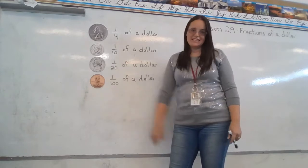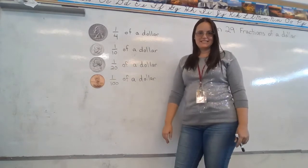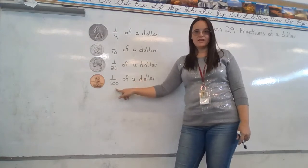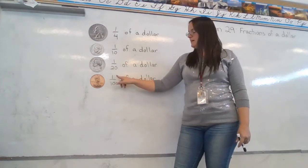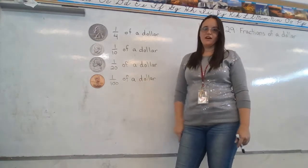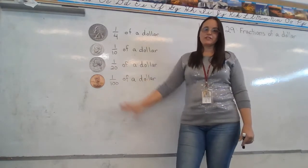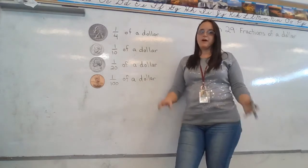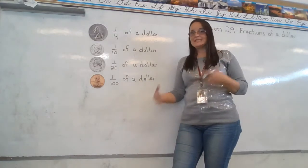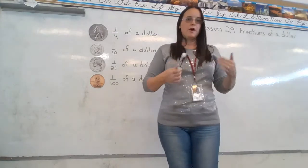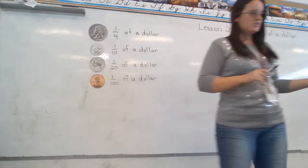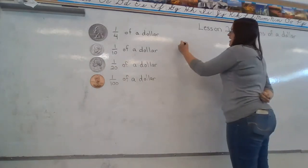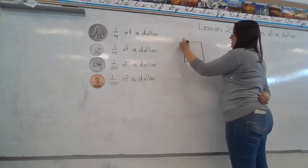And finally, pennies. How many pennies does it take to make a dollar? One hundred, which is why we have a hundred here in the denominator. One penny is one hundredth of a dollar. So we start fractions with these coins. You'll see different problems where they're asking what fraction of a dollar is, and they'll give you some coins to figure that out with. But right now, we're going to switch gears just a little bit, and I'm going to ask you what fraction of the shape is shaded.